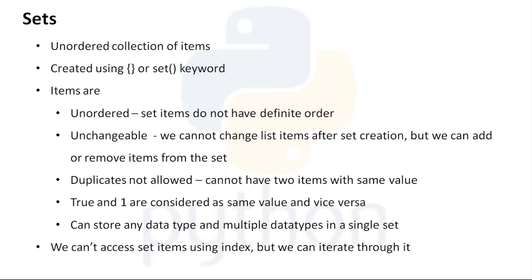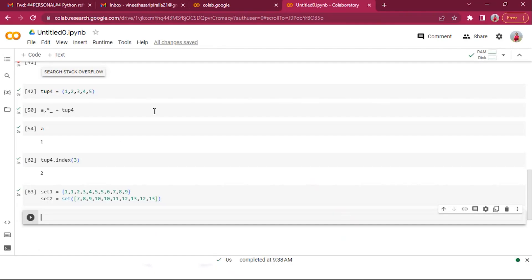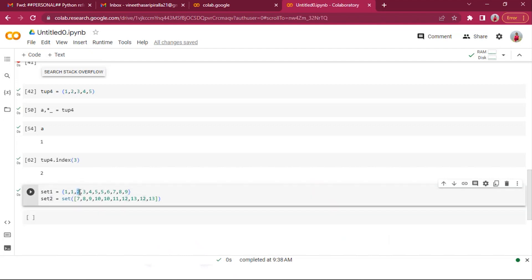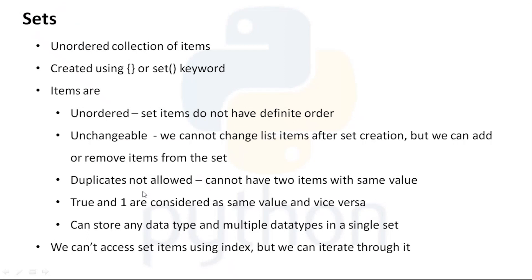Items within sets are unchangeable — sets are mutable in that we can add items, remove items, and perform updates, but we cannot change existing items. For example, if we have a set {1, 2, 3, 4} and we want to replace 2 with 'two', we won't be able to do that. We can add or remove elements, but cannot reassign existing elements.